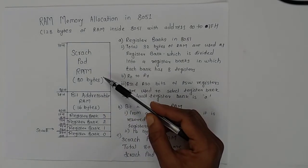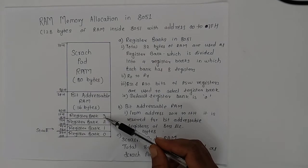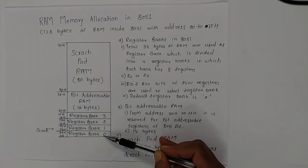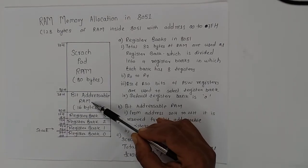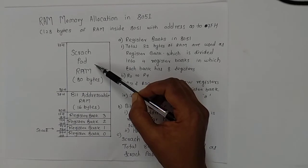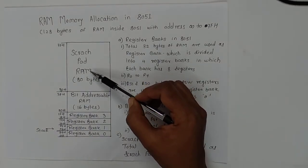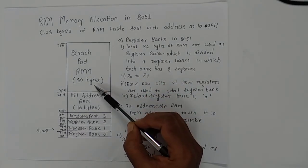One is register bank where we have 32 bytes. Above that we have bit addressable RAM which is of 16 bytes. And the third we have scratchpad RAM which is having 80 bytes.